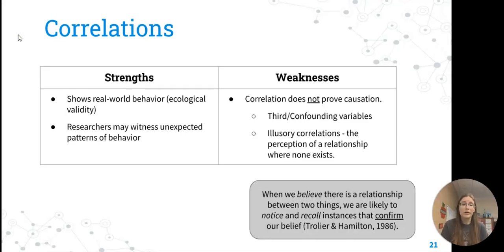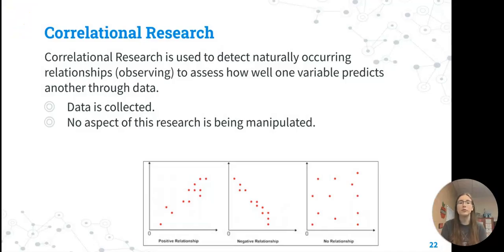Correlations are based off of real-world behavior, so they have a little more ecological validity because it's not necessarily in a controlled environment. We can see unexpected patterns of behavior as we're collecting data. Again, it does not prove causation. Sometimes there are third variables at play that are really the cause between things, and we can have illusory correlations where the numbers just happen to change together at the same time, but there's not actually a real relationship. If we're expecting a relationship to be there, we're more likely to pay attention to little changes and recall those things, and it will confirm our beliefs in instances of confirmation bias. We have to be careful with correlations.